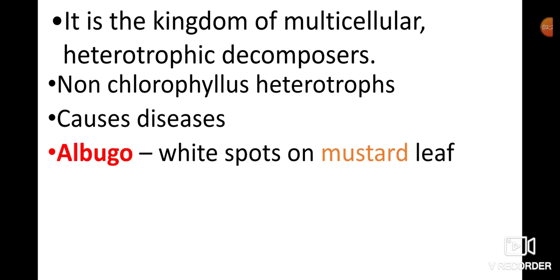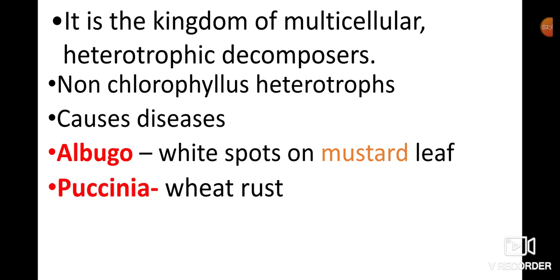For example, in mustard plants, white spots appear on leaves because of the fungus Albugo. Albugo is a fungus that causes white spot disease on mustard leaves. Another fungus is Puccinia, which causes rust disease on wheat plants.